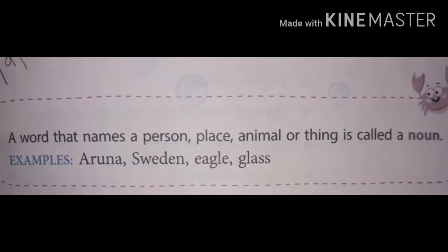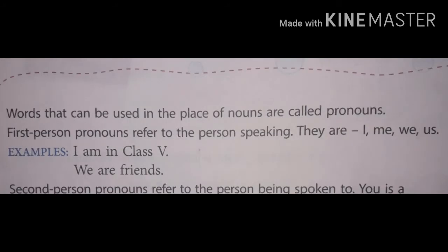If you remember, a noun is a word that names a person, place, animal, or thing. For example: Aruna, Sweden, eagle, glass. And do you remember what is a pronoun? Words that can be used in place of nouns are called pronouns.